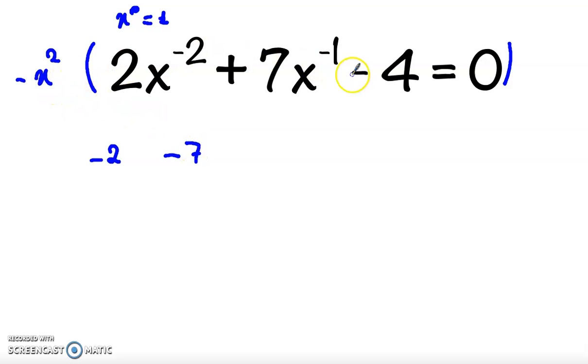Now x square times x minus 2 equals x to power 1 or x minus multiplied by minus equals plus 4 x square equal to 0. We can rewrite this equation as 4 x square minus 7 x minus 2 equal to 0.